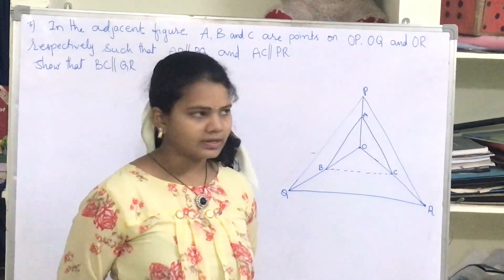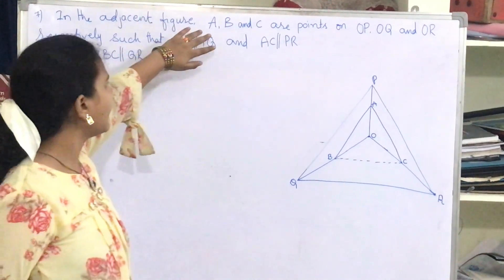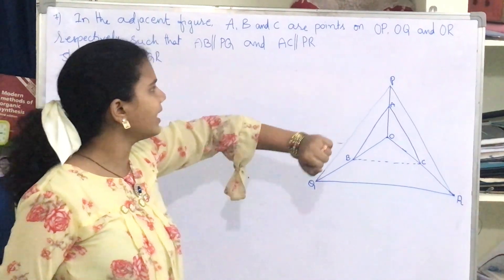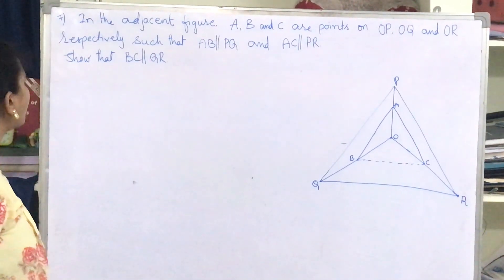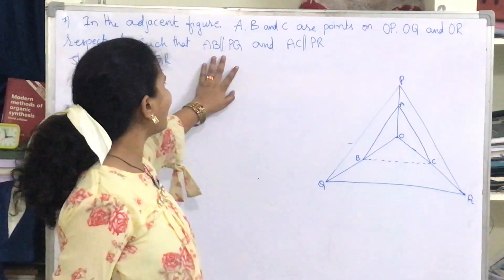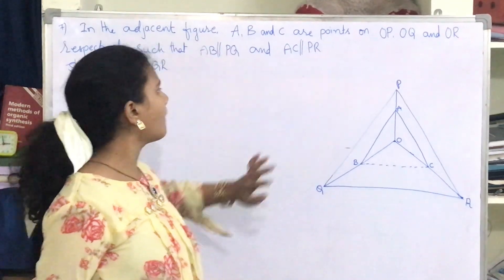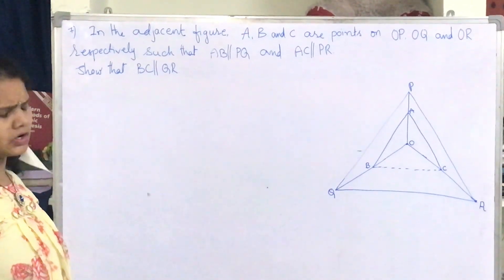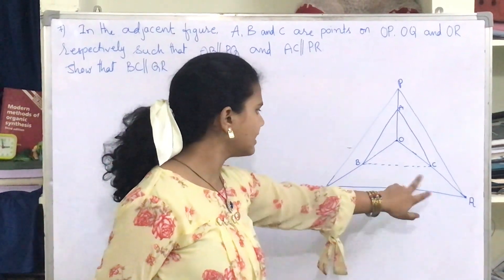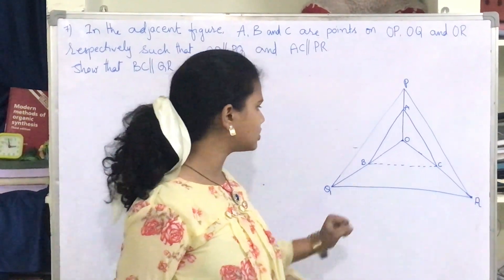Welcome, let's start with the 7th question. In the adjacent figure, A, B and C are points on OP, OQ and OR respectively, such that AB is parallel to PQ and AC is parallel to PR. We must show that BC is parallel to QR.